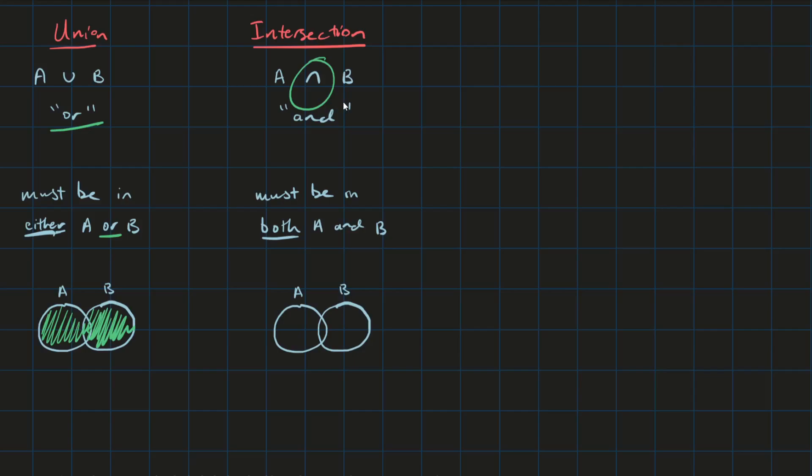Now the intersection is a bit easier to understand. It has to be in both A and B. So if you imagine the intersection of something, it's essentially where they overlap. And this is exactly what the Venn diagram looks like as well. The intersection is just that little bit where the two A and B events overlap.